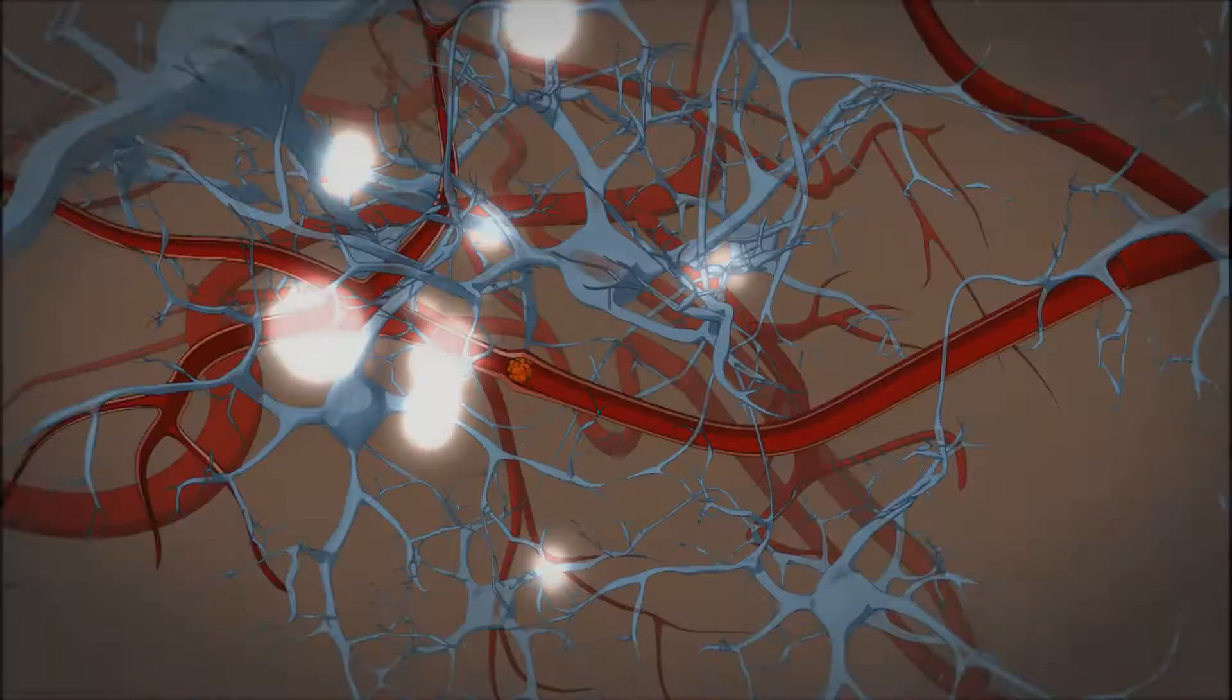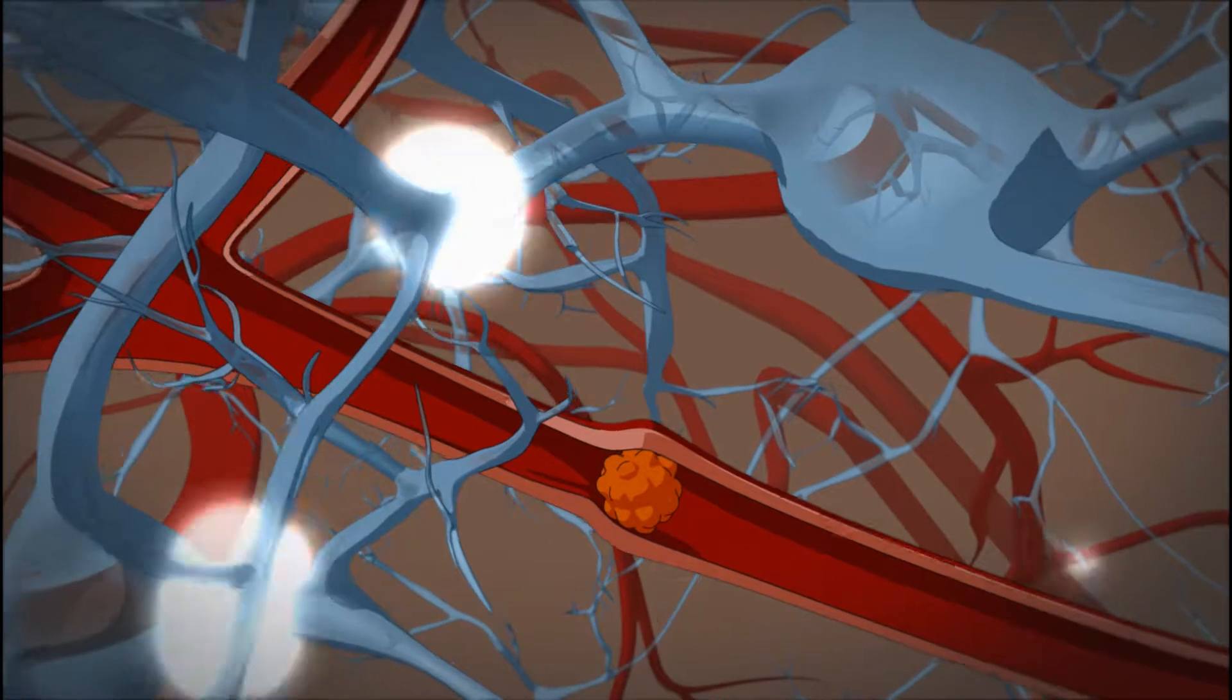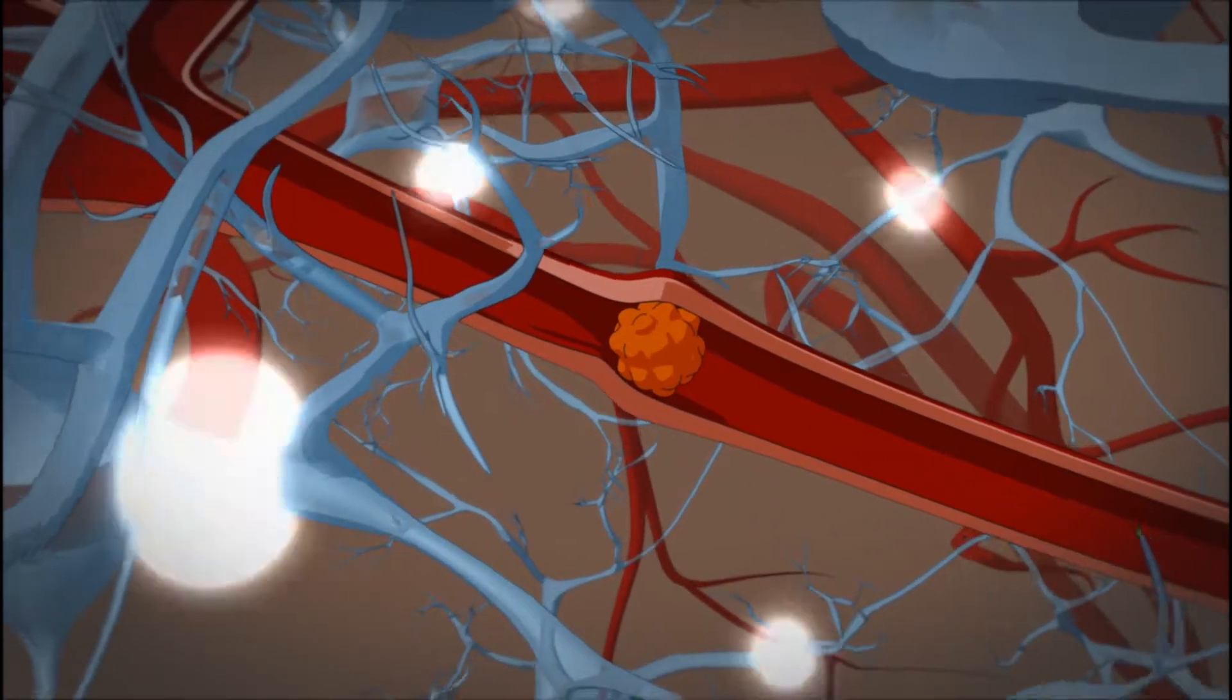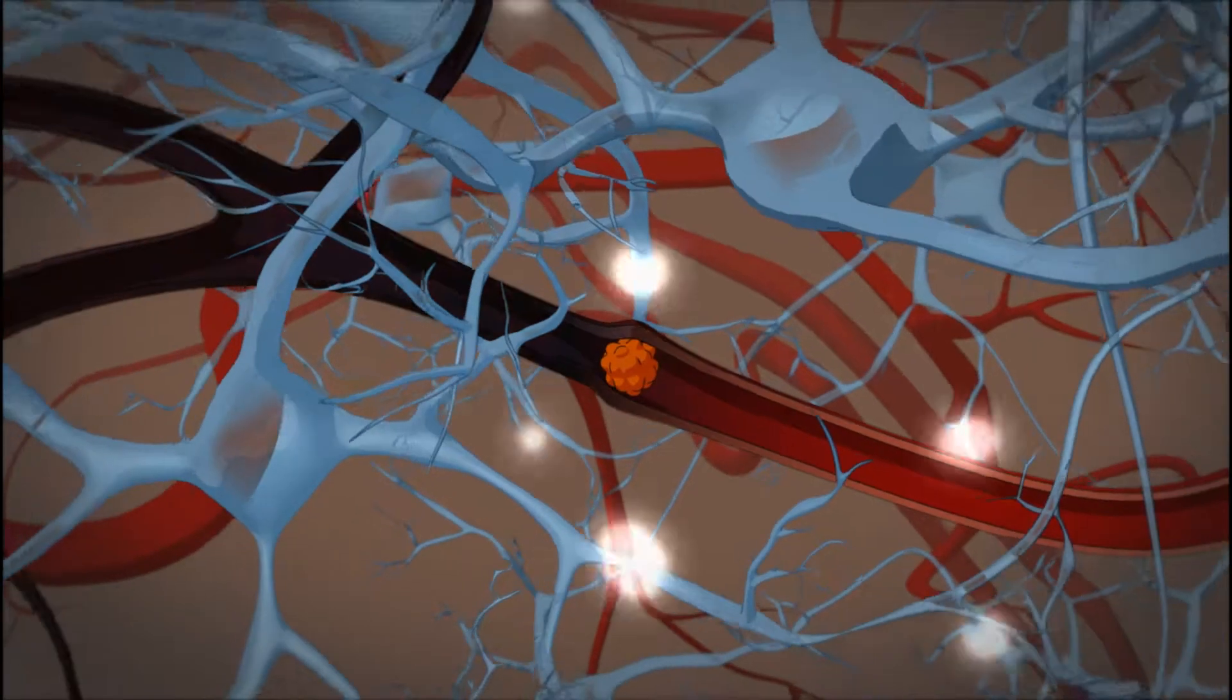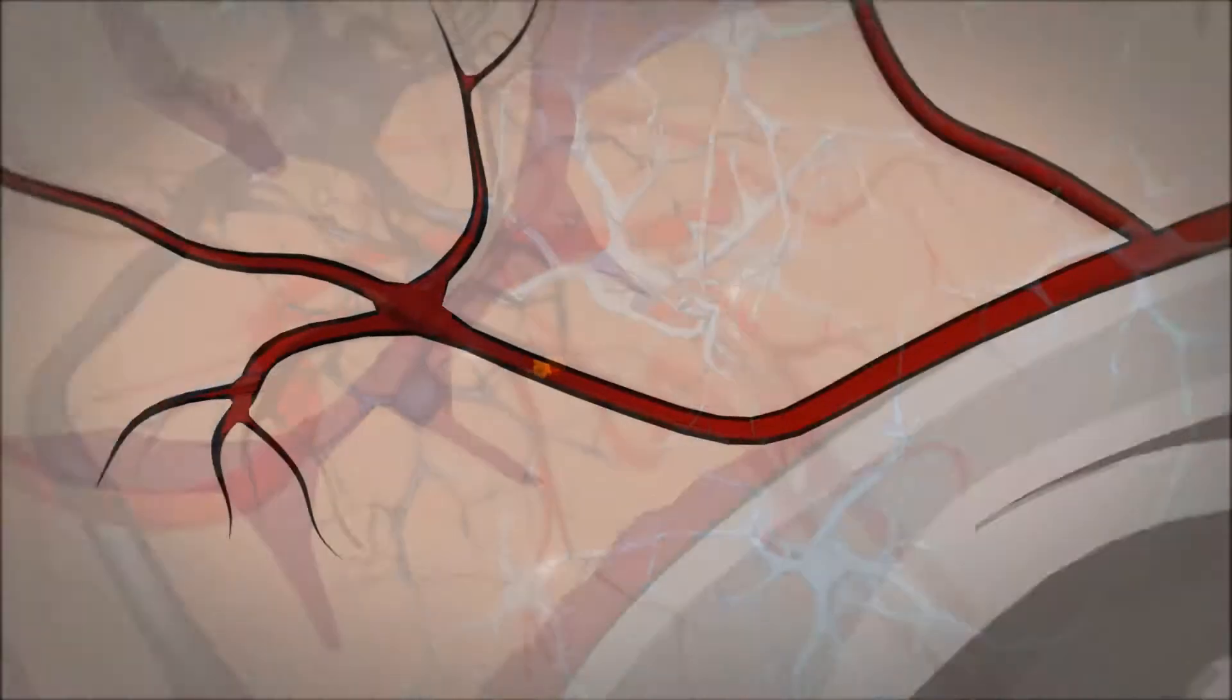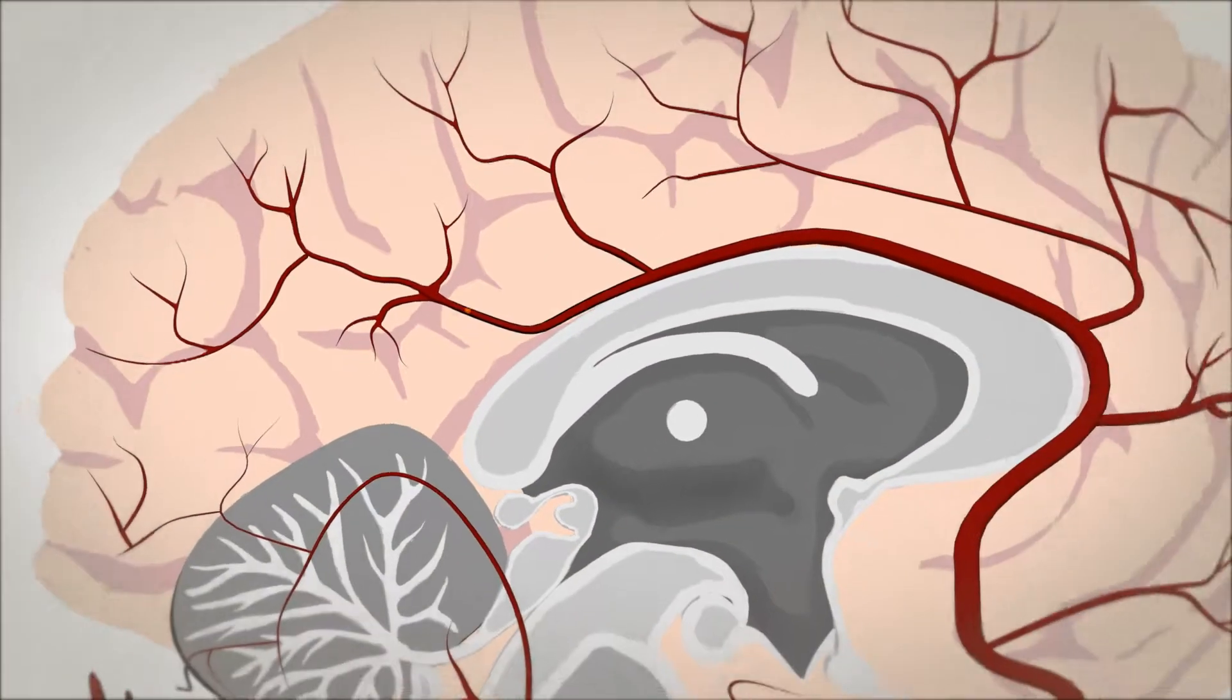This causes the surrounding area of the brain to be starved of oxygen, normally delivered by the blood. Eventually, this causes the nerve cells to stop working and die. This is called an ischemic stroke and can affect large areas of the brain.